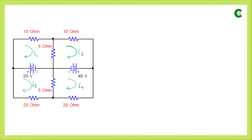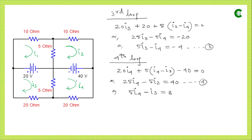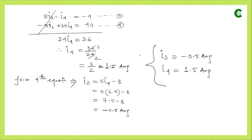Next we apply the same rules to the third and fourth loops, developing Equations 3 and 4. Solving for i3 and i4, we get i3 = −0.5 A and i4 = 1.5 A. The negative value for i3 means its actual direction is opposite to our assumed direction.